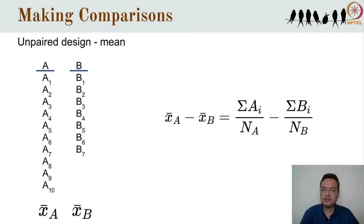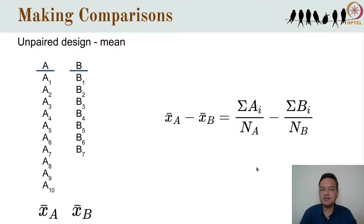Unlike the paired situation, we can't take differences within pairs and then average across pairs. Rather, we average across all data within each group and then examine the differences in the means of the two groups. Our goal is to calculate, as best we can, the true population difference in the means, as estimated by the difference in the means of the samples collected from both groups.